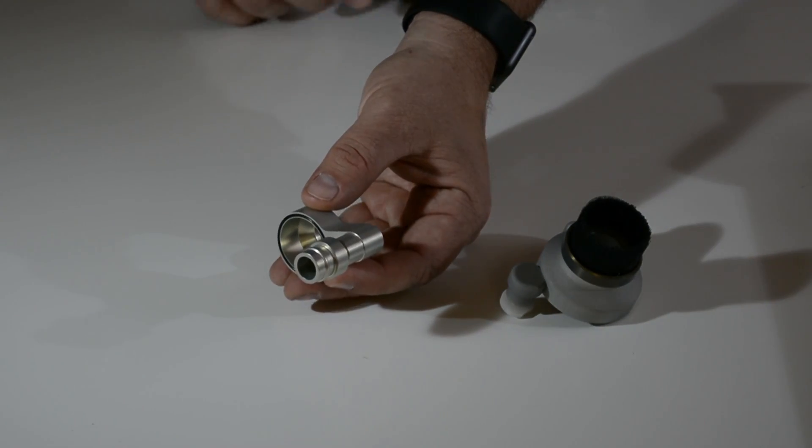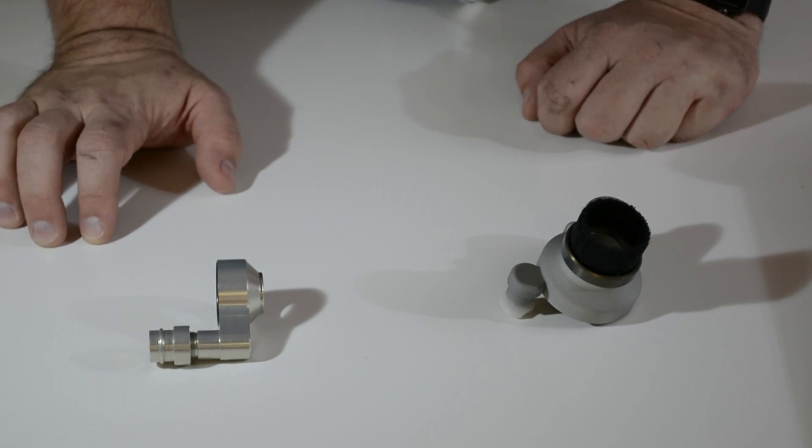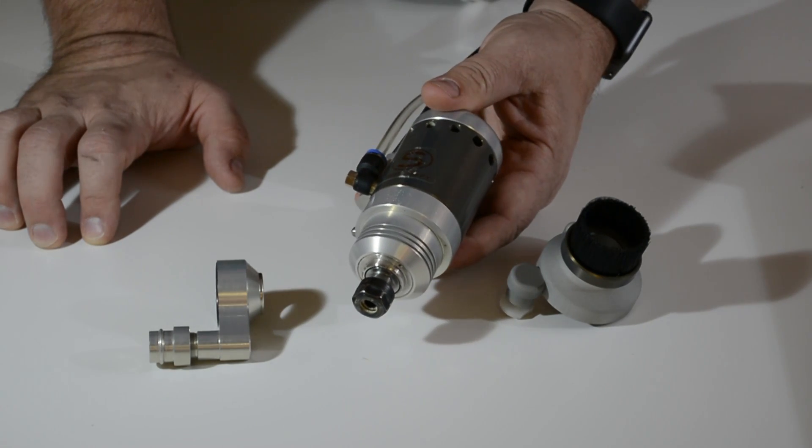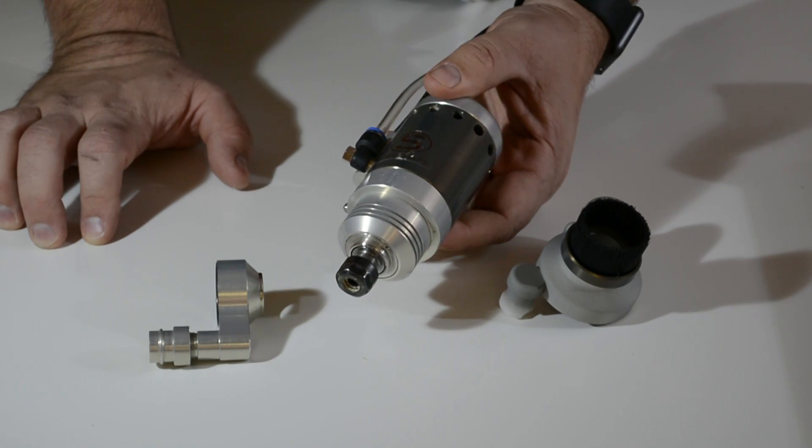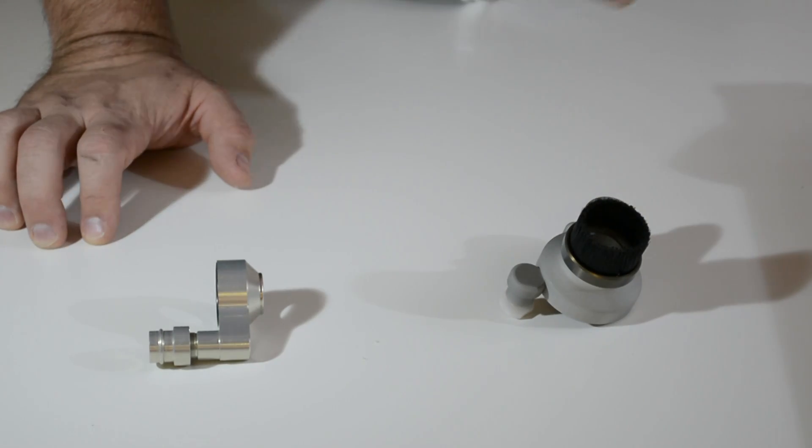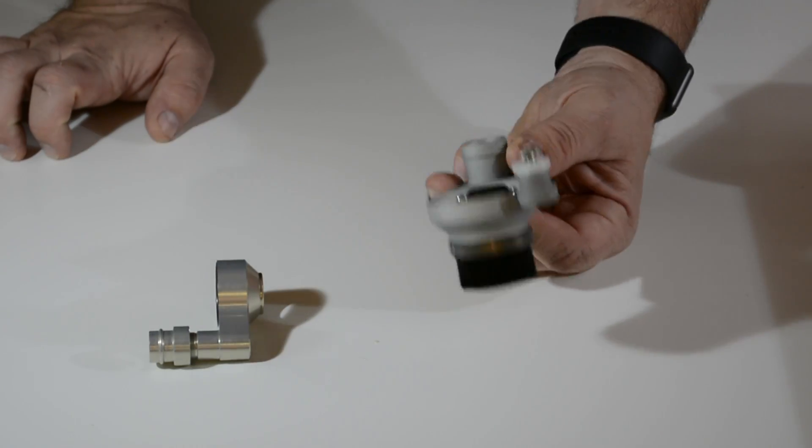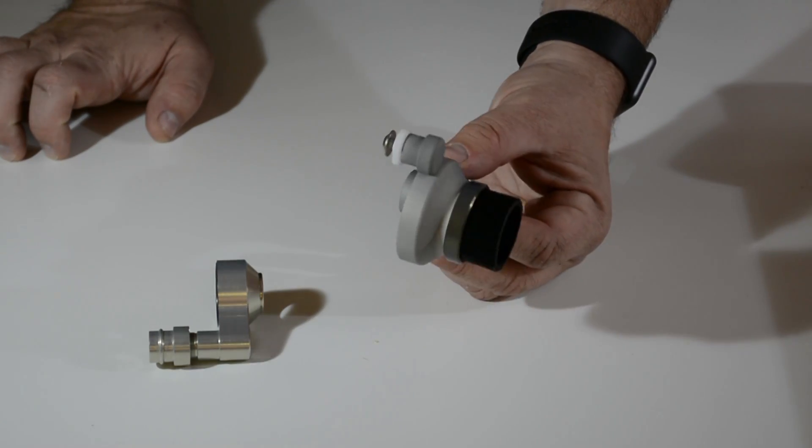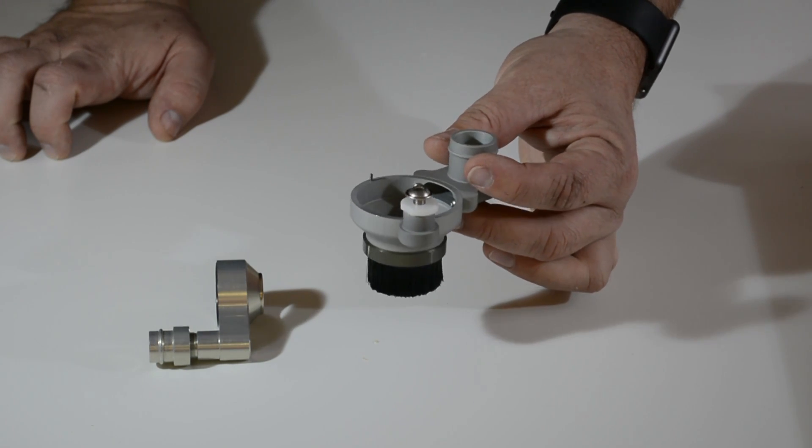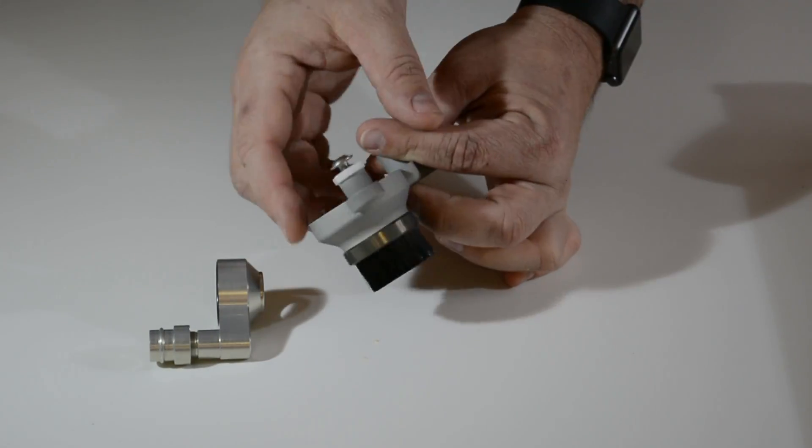However, if at some point you either plan on starting with the Dremel or Proxxon or if you're going to start with the HF500, then you need to start off with the HF500 exhaust adapter. Now this adapter will work with both the Dremel and Proxxon, but it is also designed specifically—it's wider and designed to work with our HF500.